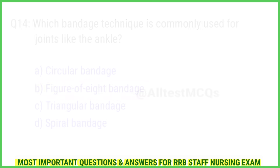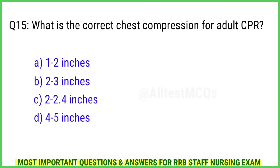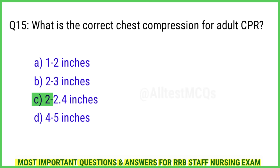Question 15. What is the correct chest compression depth for adult CPR? The right answer is Option C: 2 to 2.4 inches.